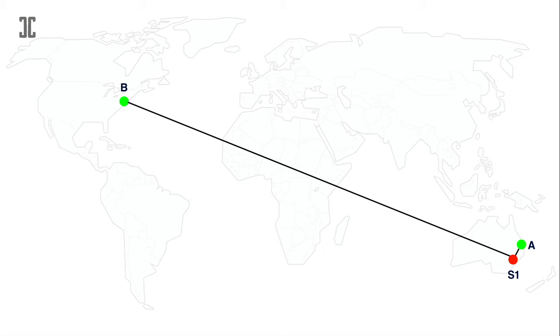The obvious choice is to select the server near one of the users — for example, we put the server in Sydney. But if Charlie joins from the U.S., we have a problem. There are actually two separate problems here. One is that since the connection from Bob to Charlie goes through Sydney, the round-trip time is very long between the two endpoints — it could be as much as 600 or 800 milliseconds, which is bad for a real-time conference.